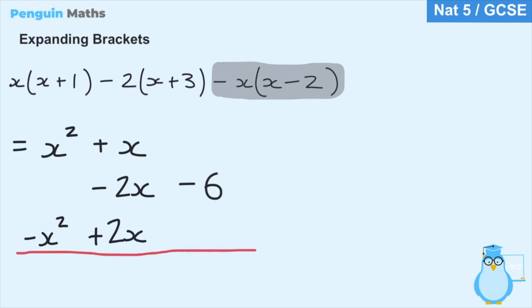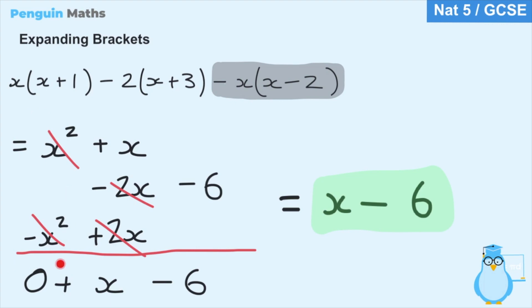Now it's time to simplify. For the x squared terms: positive x squared minus x squared gives 0. For the x terms: positive x minus 2x plus 2x — the 2x and minus 2x cancel out — leaving just x. For the constants we only have minus 6. Because the x squared terms cancelled to 0, our final simplified expression is just x minus 6.